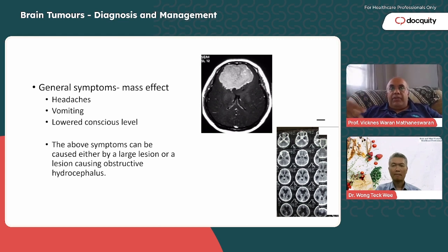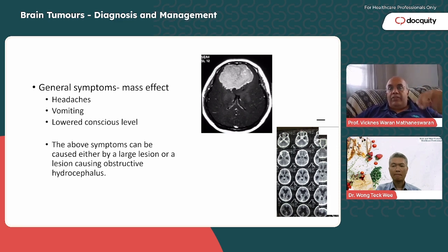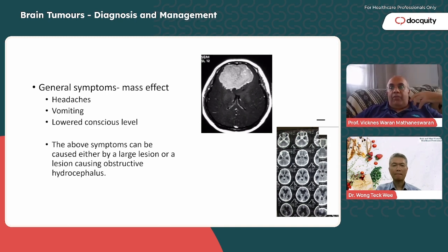CSF forms at the rate of 20cc per hour, and there's about 100cc of CSF in your cranial cavity. This CSF has to circulate and find its way out. If you block the CSF flow, it is more dangerous than the tumor growing, because the CSF pressure will build up very quickly.